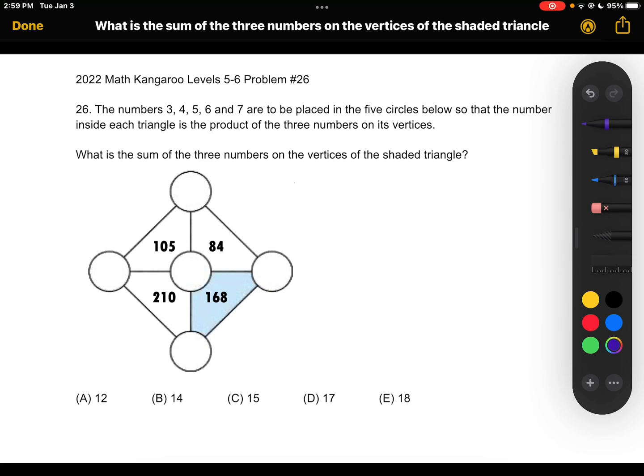A, 12, B, 14, C, 15, D, 17, or E, 18? Okay, so let's emphasize what it is we want to find in this problem and it is the sum of the three numbers on the vertices of the shaded triangle.